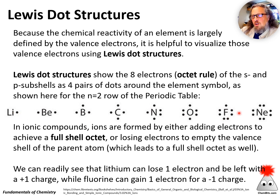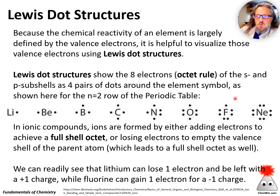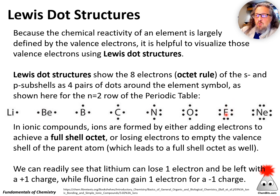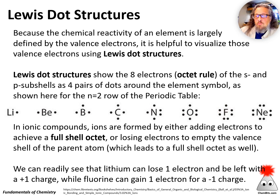If I go all the way to the other end where I'm at fluorine, fluorine has seven electrons already. So the easiest way for it to achieve the octet rule — that full configuration — is by gaining one electron. When fluorine gains one electron, it becomes F minus, the fluoride ion.